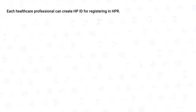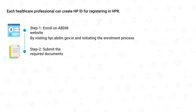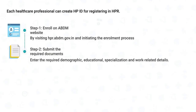Let us understand how healthcare professionals can generate their Healthcare Professional ID, or HPID, for registering in HPR by following two simple steps: enrolling on the ABDM website by visiting hbr.abdm.gov.in and initiating the enrollment process; and submitting the required documents by entering the required demographic, educational, specialization, and work-related details.